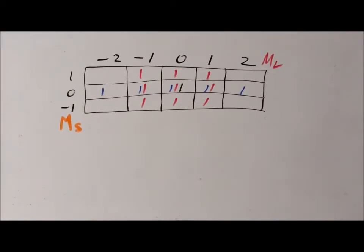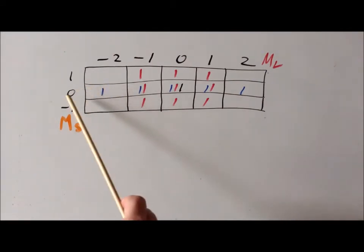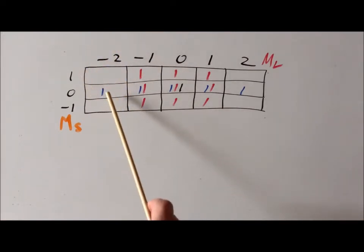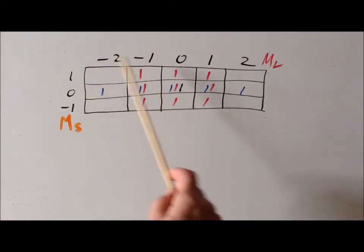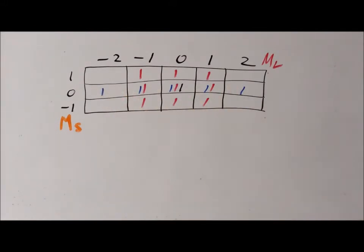Our next step in deriving the spectroscopic term symbols for the P² situation is to tabulate the big M sub S and big M sub L values that we obtained for the microstates. Whenever we have a microstate with a particular combination of M sub S and M sub L, for example M sub S equals zero and M sub L minus two, we put one tick mark in that box. Once we've completed our table, we'll have one tick mark for each microstate. It is important to verify that there are exactly as many tick marks as there are microstates. We have 15 tick marks corresponding to the 15 microstates.